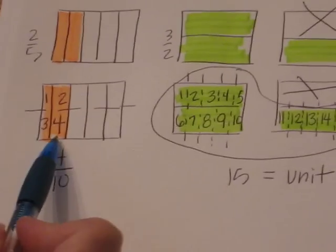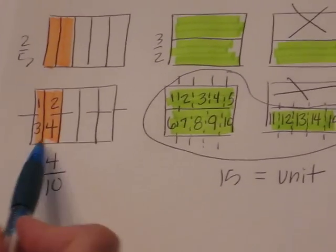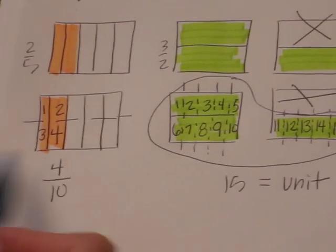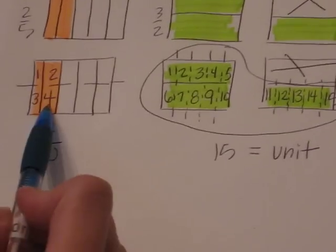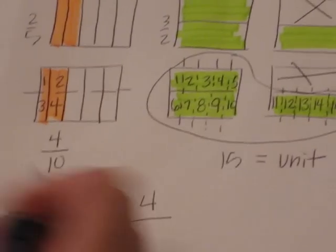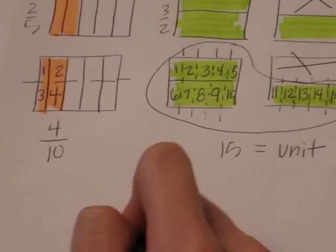That means it's going to be the whole. Alright, when we look over here, clearly we don't have fifteen units. So our answer is going to be less than one. In fact, it's four out of fifteen.